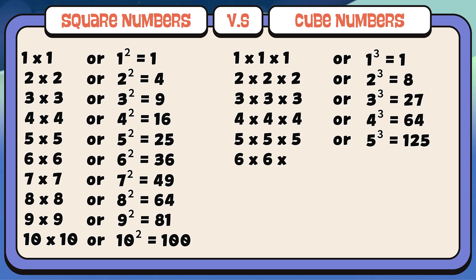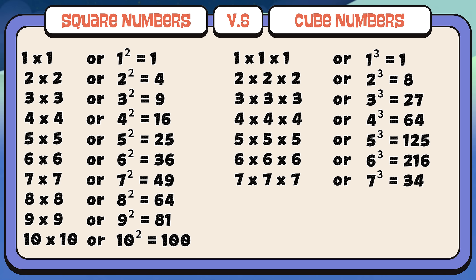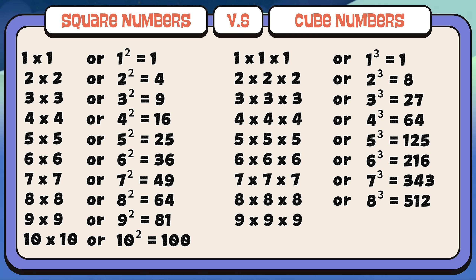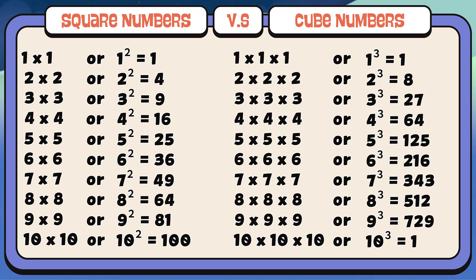Six times six times six or six cube is equals to two hundred and sixteen. Seven times seven times seven or seven cube is equals to three hundred and forty-three. Eight times eight times eight or eight cube is equals to five hundred and twelve. Nine times nine times nine or nine cube is equals to seven hundred and twenty-nine. Ten times ten times ten or ten cube is equals to one thousand.